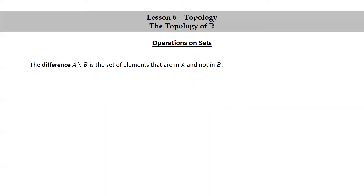The difference, or set difference, A minus B, is the set of elements that are in A and not in B. Symbolically, we have A minus B equals the set of X such that X is in A and X is not in B.